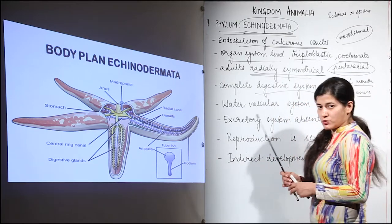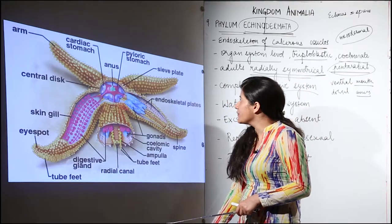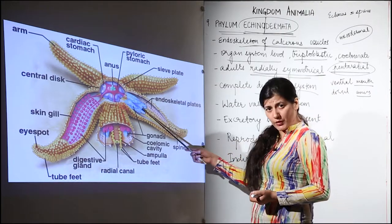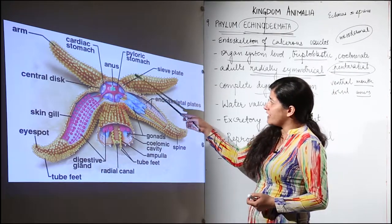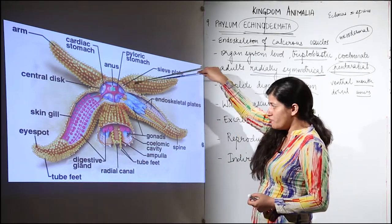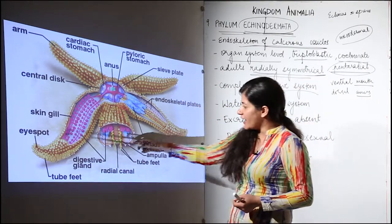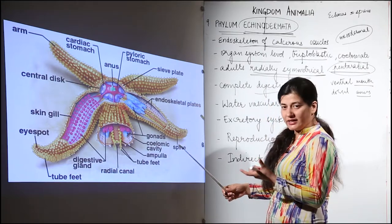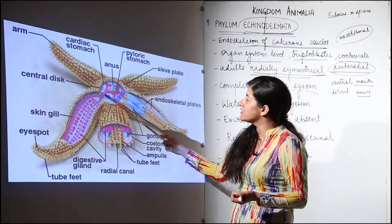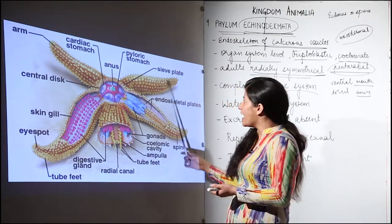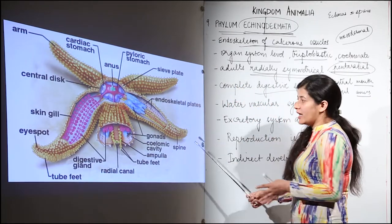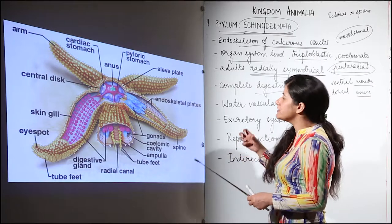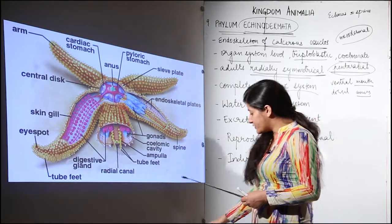You can clearly see the endoskeletal plates, which are calcareous. There is a sieve plate through which the madreporite is connected, and all movement of water enters through it. There are eye spots and tube feet. There is a central disc and the cardiac stomach lies here. Each arm is shown, and this gives you an idea that these are spiny organisms — which is why the name is 'echinoderms.'